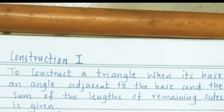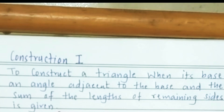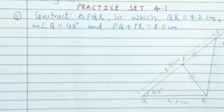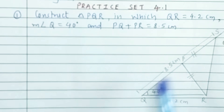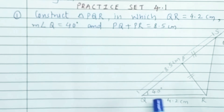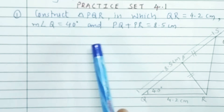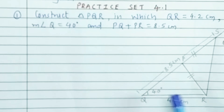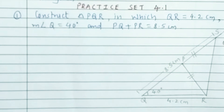First type of construction: to construct a triangle when its base, an angle adjacent to the base, and the sum of the lengths of the remaining sides are given. Practice Set 4.1, first example: Construct triangle PQR in which QR is equal to 4.2 cm, angle Q is 40 degrees, and PQ plus PR is equal to 8.5 cm.